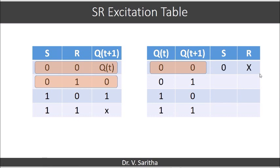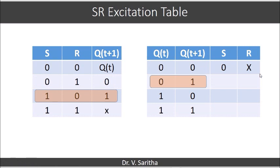The next case: Q(t) is equal to 0 and Q(t+1) equal to 1. In this case, Q(t+1) equal to 1 but there is no other case where Q(t+1) is complement of Q(t) — it is not there in the function table. So we will consider only one case, and we will represent S as 1 and R as 0.